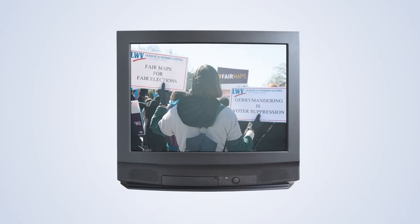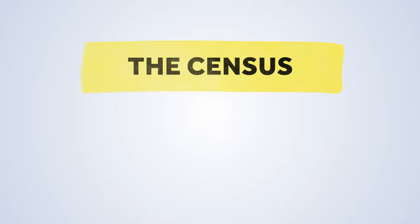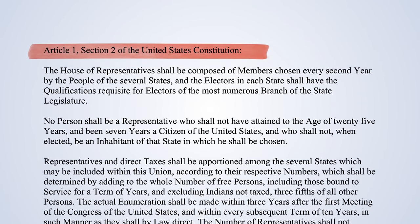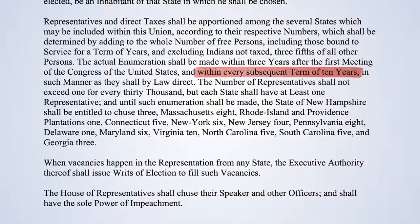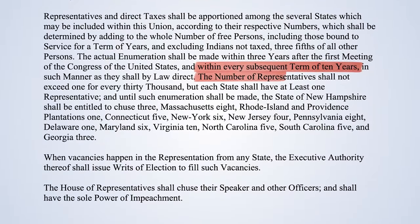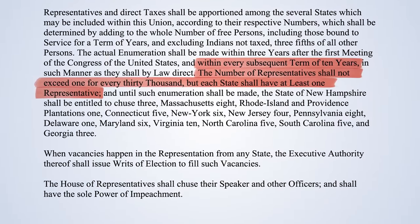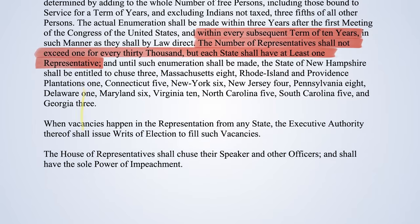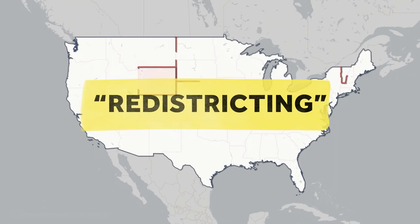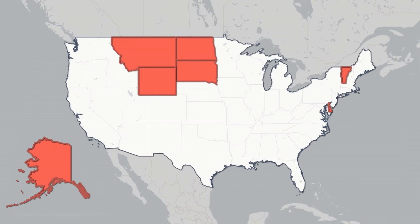If it feels like you've heard this debate before, it's because you have. Every 10 years, two things happen in the U.S.: the census and redrawing congressional districts. The Constitution lays out this process, stating the government must count the population every decade and, based on that number, reconsider voters' congressional districts. That is redistricting, and it happens in every state except the seven that only have one congressional district.